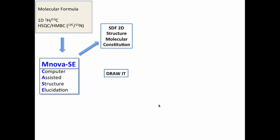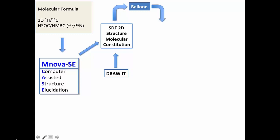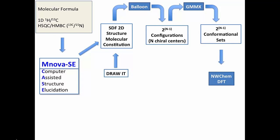But there will be another module, that I will tell you the name later, in which you can draw the structure in 2D. And then after that, the program will interact with this third-party software that will be in the module. That is called Balloon. Balloon will generate 2 to the n minus 1 configuration for n chiral centers. Then it will interact with GMMX and will perform the conformational analysis. And it will generate 2 to the n minus 1 conformational sets.